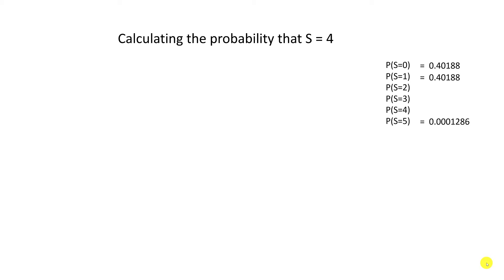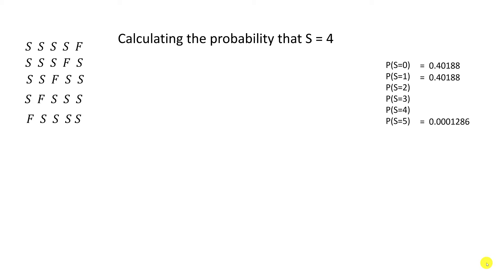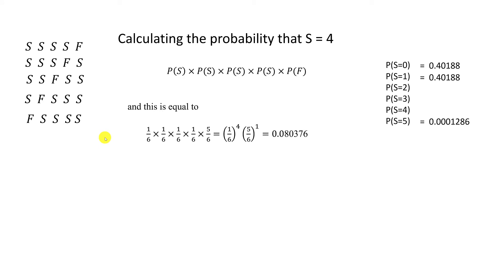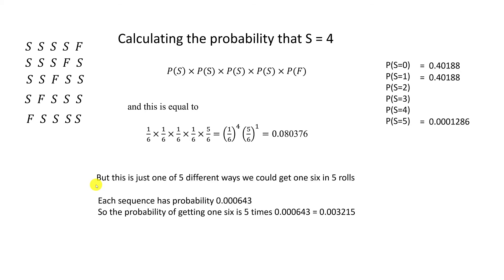Calculating the probability of S equals four is similar, because again what we've got this time is one failure in five rolls — so four successes and one failure. That can also happen in five different ways. The probability of the first of these sequences is one-over-six to the power of four times five-over-six, which equals this number. And because each of the five sequences resulting in four successes and a single failure has the same probability, we just multiply that number by five, and we end up with this number. So we can complete this entry in the probability distribution.